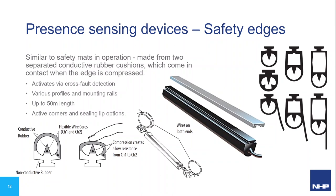Safety edges are also pressure-sensitive safeguarding products designed to detect the presence of people or objects. When compressed, two conductive rubber layers create a low-resistance short that trips the safety control system. They're used on the edges of machinery so a person contacts the safety edge before reaching further into a hazard. A great application is roller doors — if the door comes down and its safety edge contacts someone, the system halts or reverses the motor. Safety edges come in various shapes and sizes based on cushioning factor and angle of actuation, and versions with sealing lips are available, perfect for preventing rain and dust beneath roller doors.